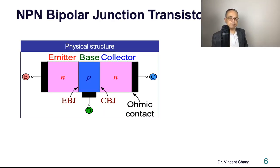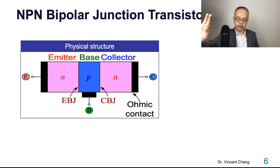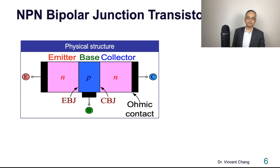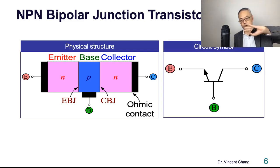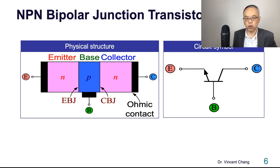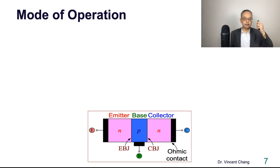For the NPN bipolar junction transistor, the same thing applies: the emitter base junction is on the left and the collector base junction is on the right. Looking at the circuit symbol for the NPN, we have the emitter base junction and collector base junction similarly represented.